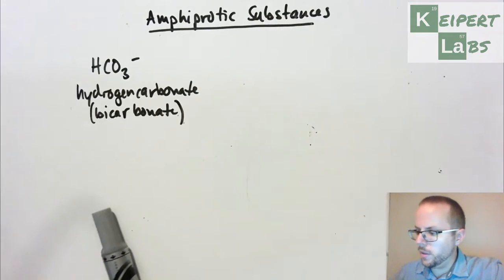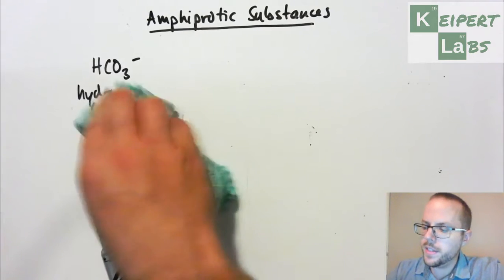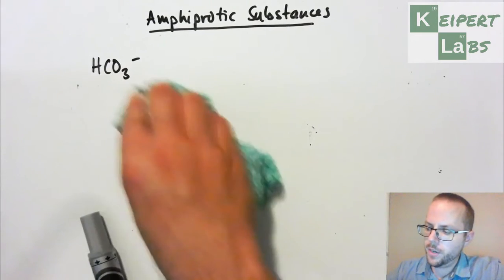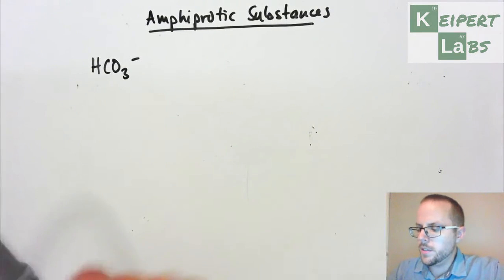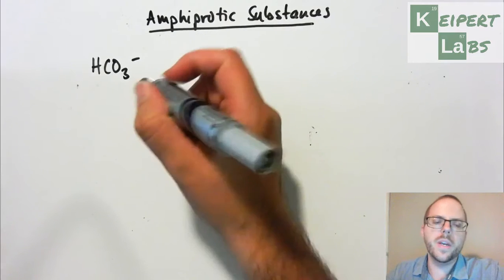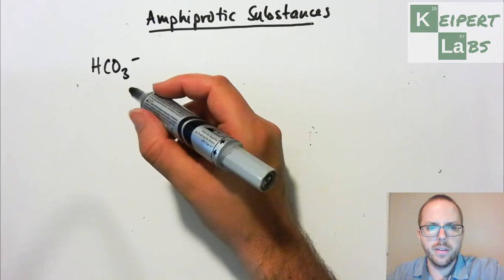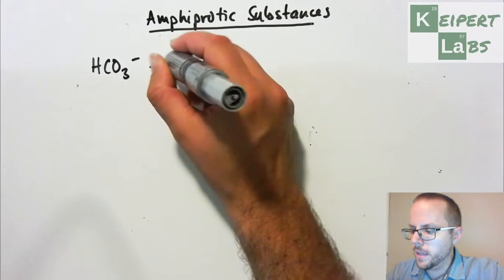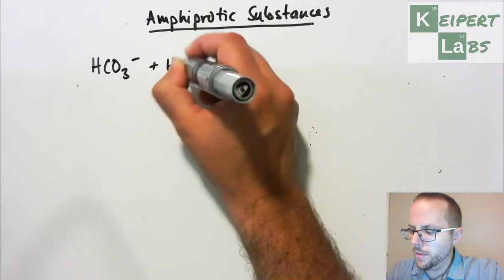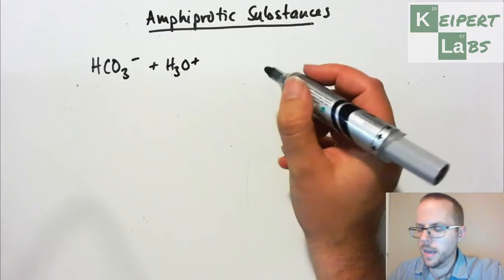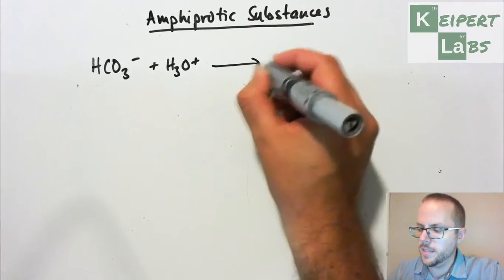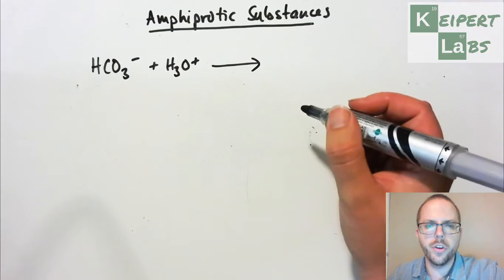So we're going to look at two examples, or look at this as an example, and then we're going to follow it up with another one. What we see is that depending on what we combine the hydrogen carbonate ion with, we can get it reacting two ways. So the first thing is, let's say we combine it with something that's a strong acid, which has this H3O+ hydronium ion.